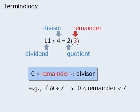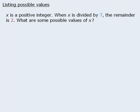Now to solve questions involving remainders, we'll need some specific skills. The first skill is listing possible values. So let's say we're given some information about x. We're told that when x is divided by 7, the remainder is 2. So what are some possible values of x?